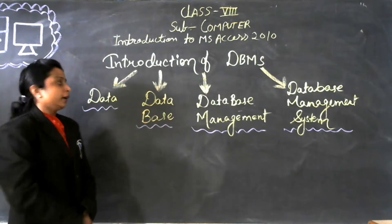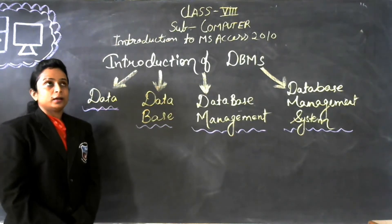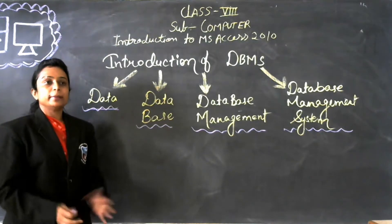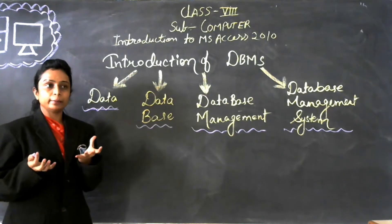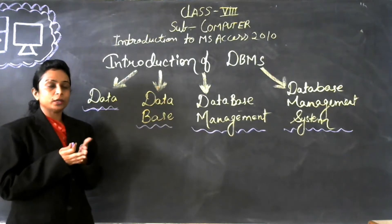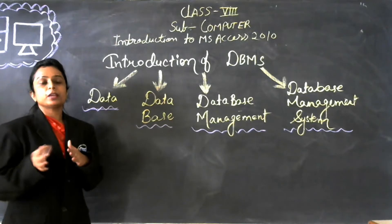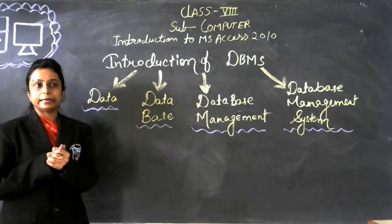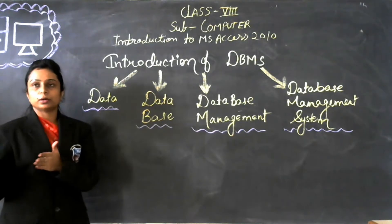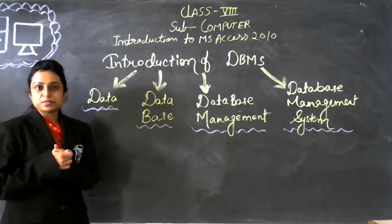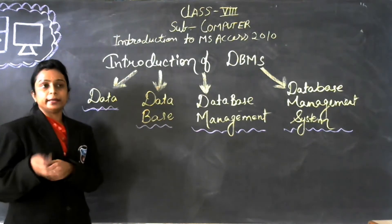Now what is data? Data is a raw fraction figure. Raw fraction figure means any kind of information — not exactly information, because data can be anything. If you are searching on the internet, or if you are shopping on any kind of shopping website, they are having the data. So data is the most important thing nowadays on the internet for any purpose.